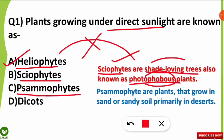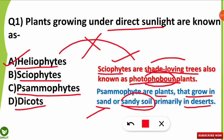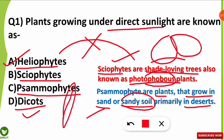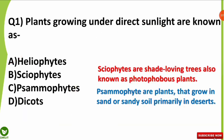Psammophytes are plants or trees that grow in sand or sandy soil, primarily seen in desert regions. Dicots are plants having two cotyledons found in the seeds of fruits — for example, mango and neem. Monocots have a single cotyledon, for example rice.